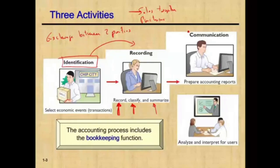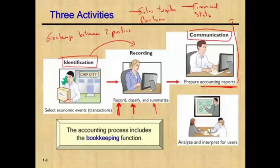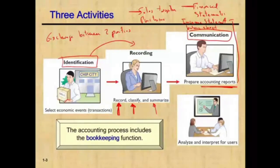At the end of the process, the most important thing is to communicate this information — to communicate what happened: what were our sales, purchases, and profit. We communicate by preparing accounting reports, and the technical term for those reports is financial statements. We will be preparing an income statement, a balance sheet, and a statement of retained earnings. The information we obtain will be communicated via financial statements.